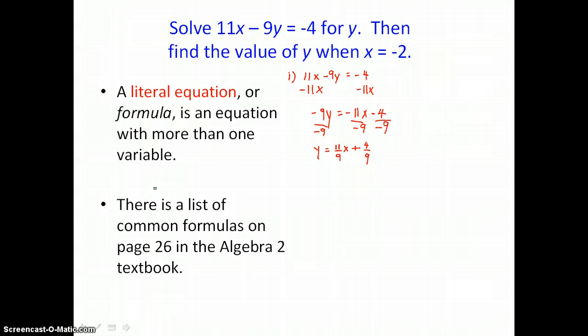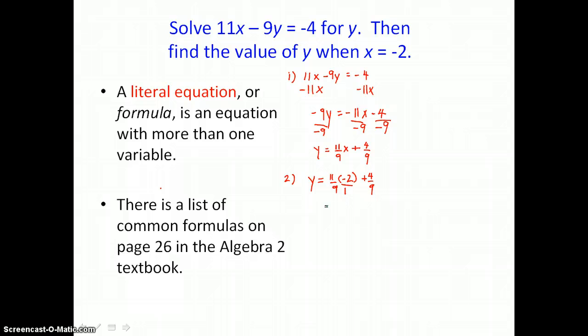So y equals 11/9x plus 4/9 is the first part of our problem. Now the second part, we're going to solve for y when x equals negative 2. Since we've already isolated y, we'll use the new form of our equation, and we'll substitute in negative 2 for x. And simplify on the right by first multiplying and then adding.